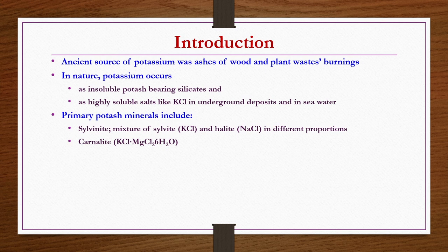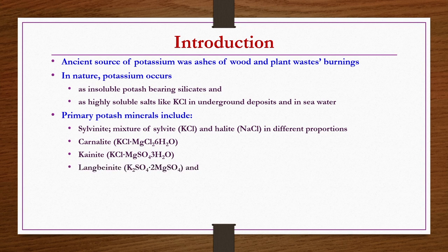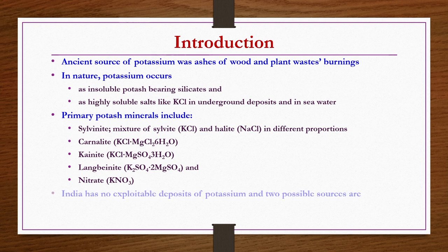Other primary potash minerals include carnallite (KCl·MgCl₂·6H₂O), kainite (KCl·MgSO₄·3H₂O), langbeinite (K₂SO₄·2MgSO₄), and niter, which is potassium nitrate. In these different forms the potash minerals are available. India does not have any exploitable deposits of potassium — there may be some sources but they are not sufficient for commercial exploitation.